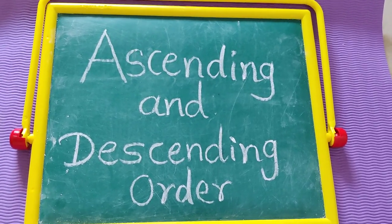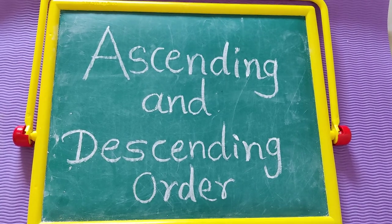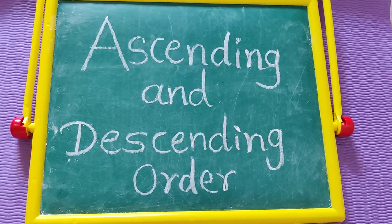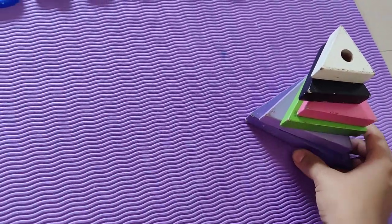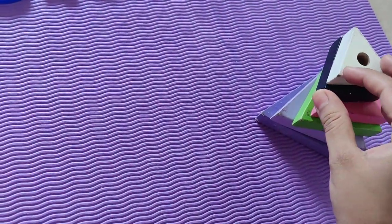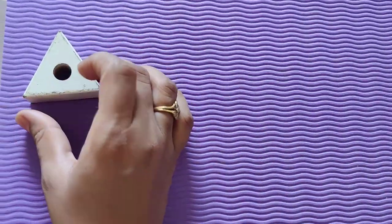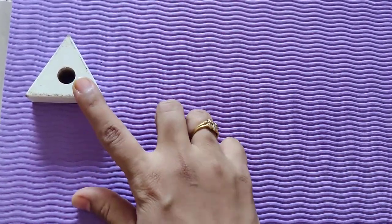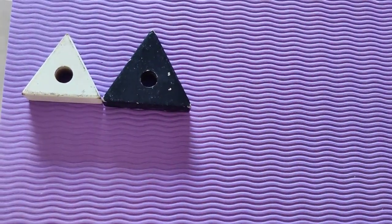Hello! Today we are going to learn about ascending and descending order — how to arrange numbers in ascending and descending order. Let's start. I have some triangles here, and I will show you ascending order. In ascending order, we arrange from smallest to biggest. This is the smallest triangle, then a little bigger triangle.